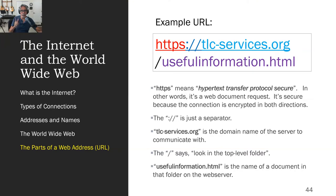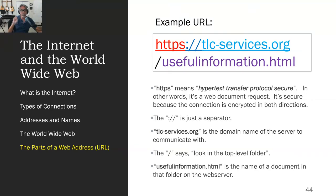The name of the website I'm going to is tlc-services.org — that's the TLC website. Then the slash says look in the top-level folder, and then 'useful-information.html' says to the web server, give me this document. That document might be a real document, as in the case with our web server, or it might be something made up that triggers a piece of software on the other end to generate a response.